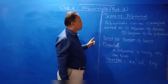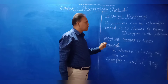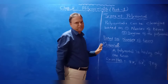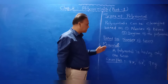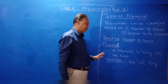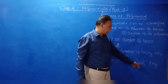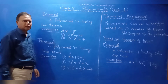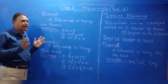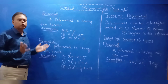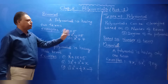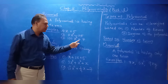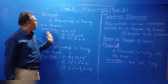Polynomials can be classified based on number of terms and the degree of the polynomial. Based on number of terms: a monomial has only one term — examples are 7x, 6x squared, 9xy. A binomial has two terms — examples are x plus 5, 3x squared minus 25, and 100x power 5 plus 7.